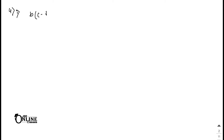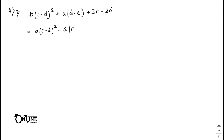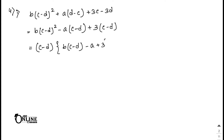Sum number 4.1: b(c minus d)² plus a(d minus c) plus 3c minus 3d. Note that (d minus c) equals minus(c minus d), so the second term becomes minus a(c minus d). Common 3 from the last two terms gives 3(c minus d). So (c minus d) is common, and the answer is (c minus d)[b(c minus d) minus a plus 3].